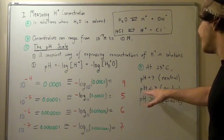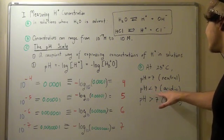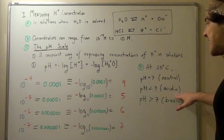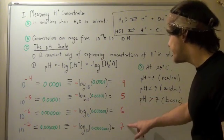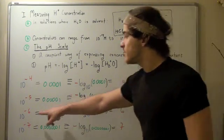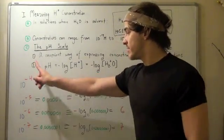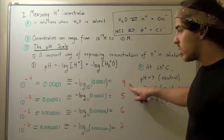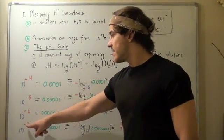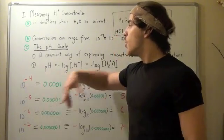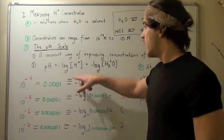Now, a pH of less than 7 represents something that's acidic. And that's because as our pH decreases, our concentration of H ions increases. Because look, as we go from 7 to 4, we go from 10 to negative 7 to 10 to negative 4 molar amounts of H+.